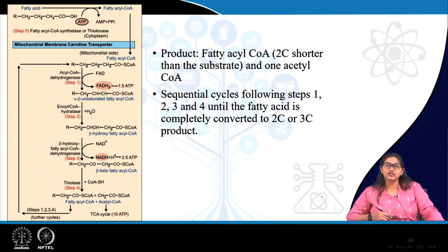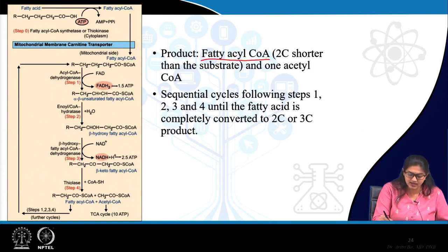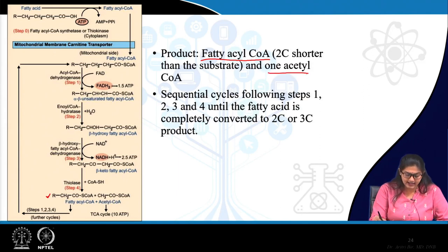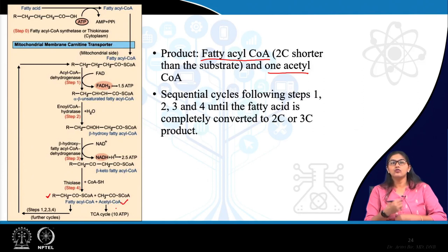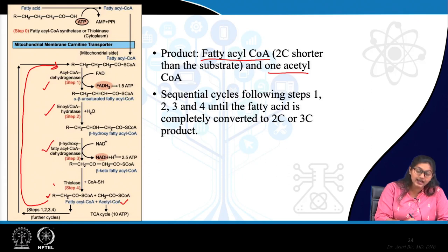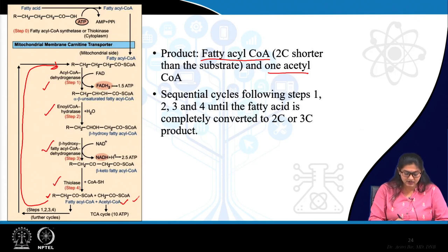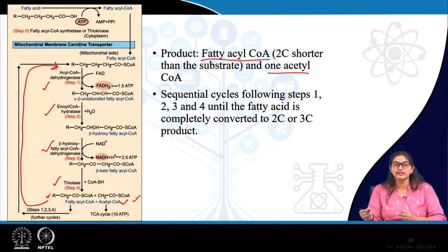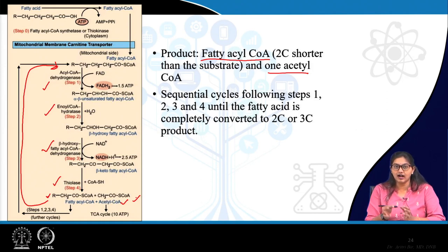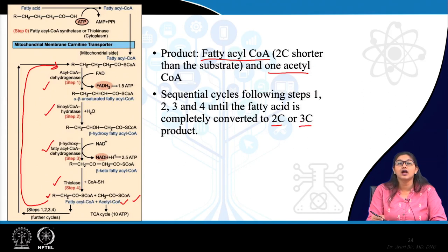In each cycle of beta oxidation, the product is a fatty acyl coenzyme A that is 2 carbons shorter than the substrate, and one acetyl coenzyme A is released. That substrate again enters dehydrogenation, hydration, again dehydrogenation, and thiolytic cleavage, releasing another molecule of 2-carbon acetyl coenzyme A. This cycle continues until all products are broken down to either 2-carbon or 3-carbon compounds.